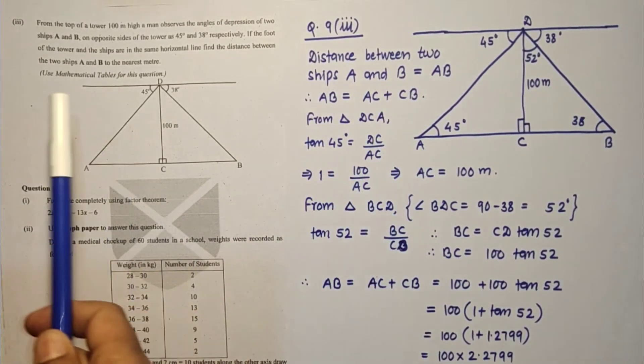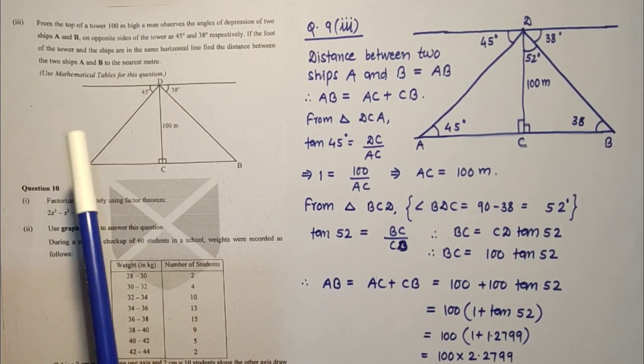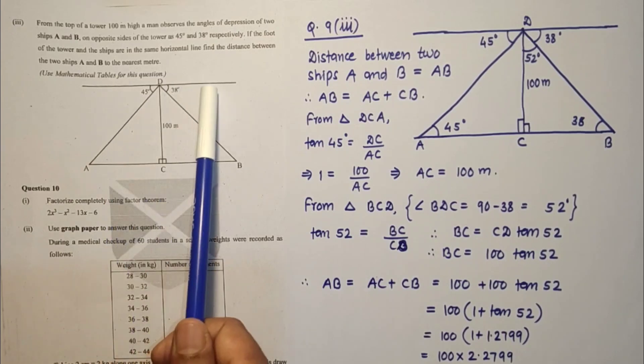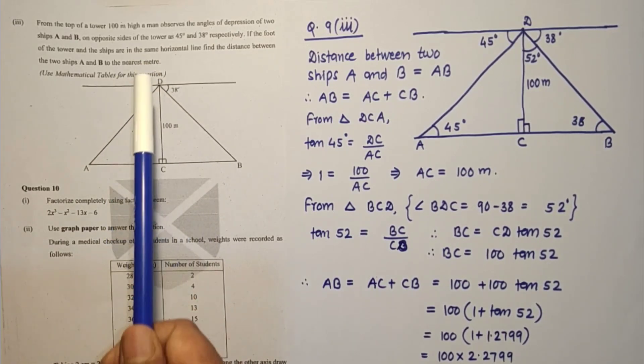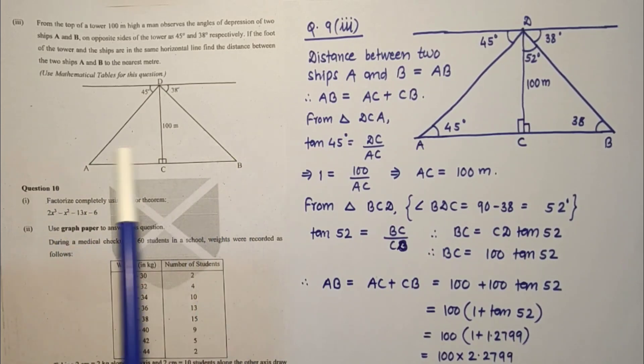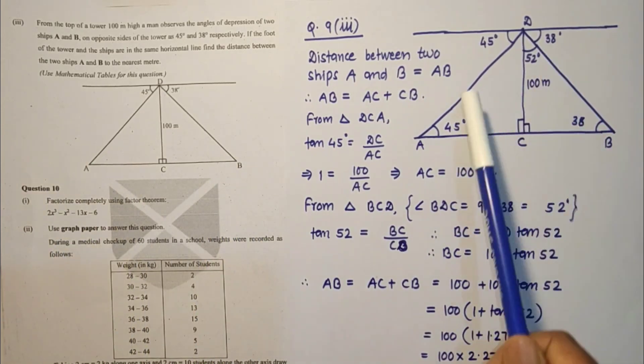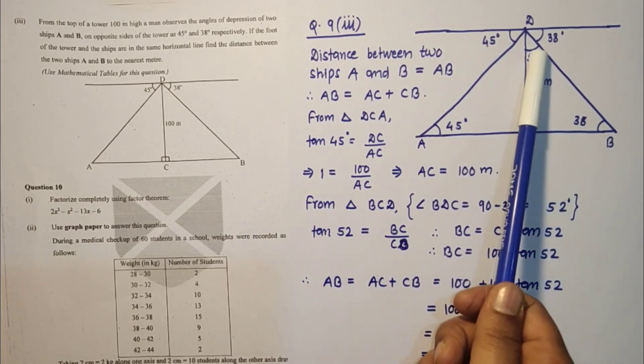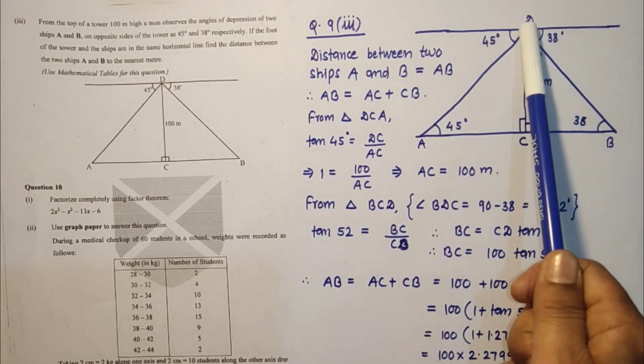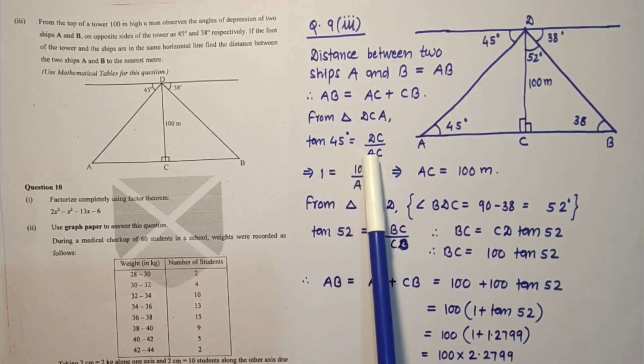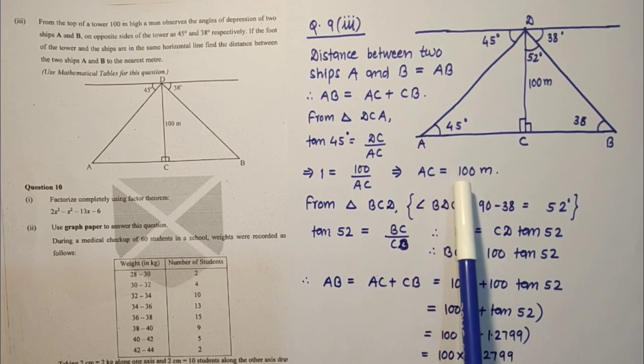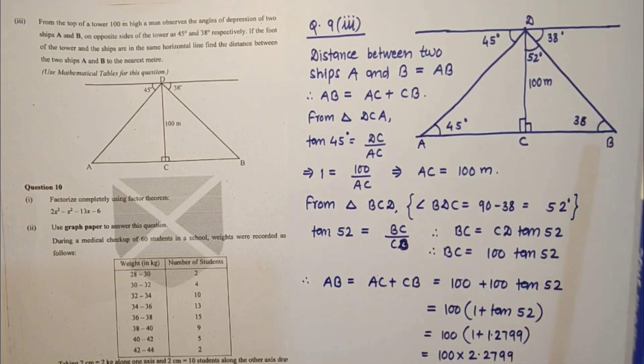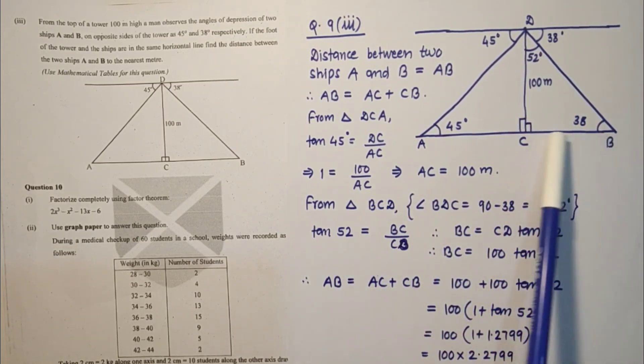Question number 9 third sub part, height and distance question. A and B are two ships, this is the point of observation. These are the angles of depression and 100 meters is the height of this point of observation. We have to find the distance between the two ships. These are the diagrams. Alternate angles are equal, this is 38. If this is 38, this is 90, so this will be 52. Using tan 45, opposite over adjacent, 1 equals 100 by AC, AC is 100.